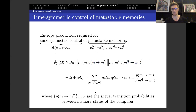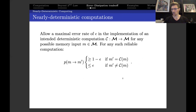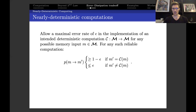We can rewrite this in terms of a Landauer-looking change in memory entropy, and also in terms of probability transitions that the computer should actually do going between different memory states. Let's also consider high reliability: any transition that should happen—if M should go to M prime—should happen with probability greater than one minus epsilon; if that transition should not happen, it should happen with probability less than epsilon.